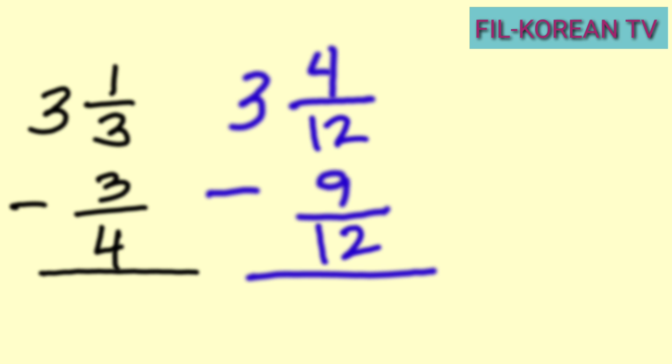So 4 twelves will borrow from the whole number 3. I will show you the shortcut method in regrouping or in borrowing from whole number. You can do the shortcut method mentally. So how to do it?